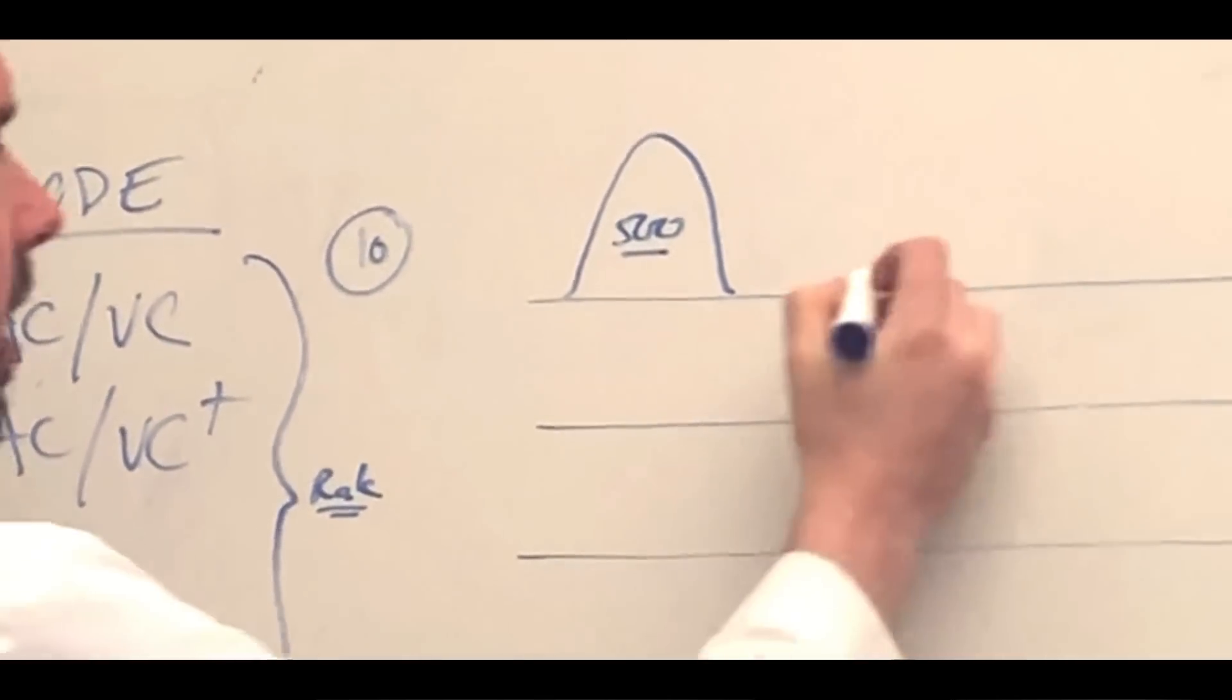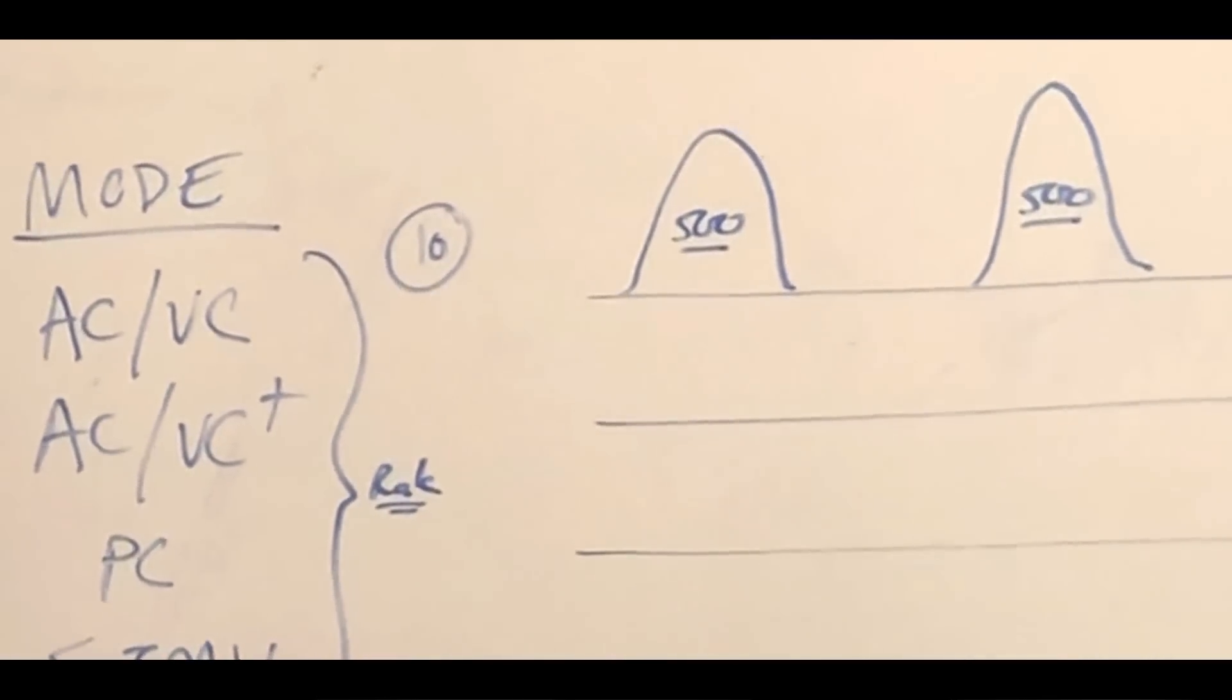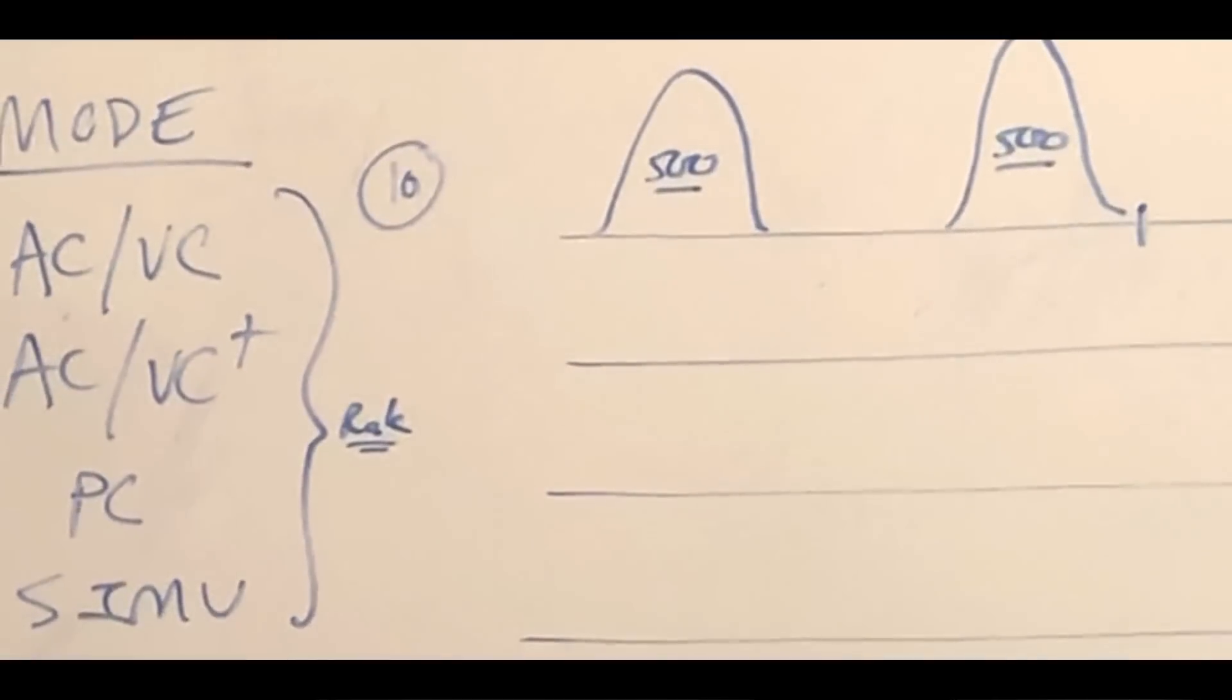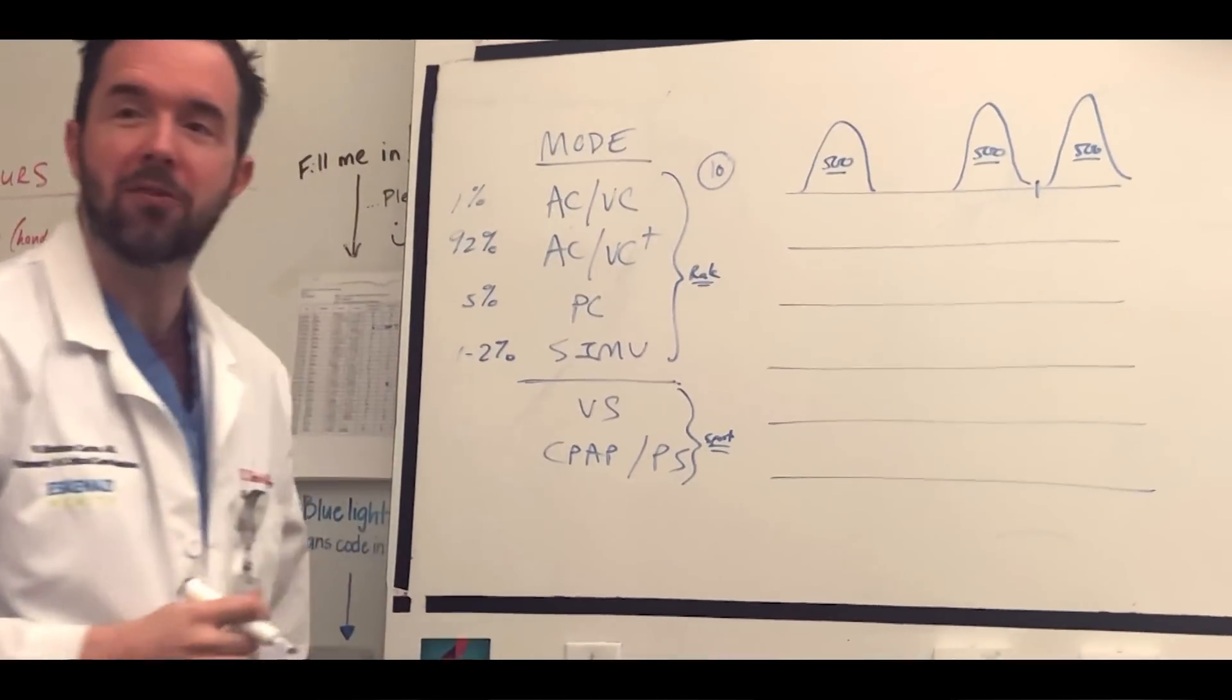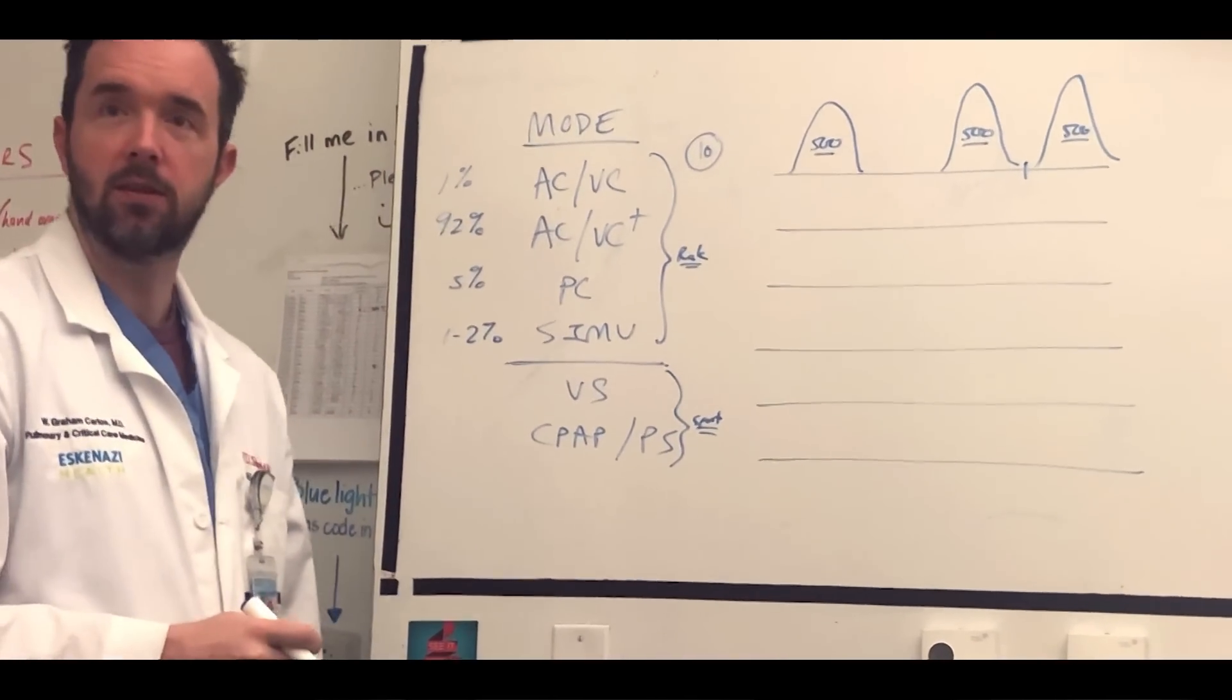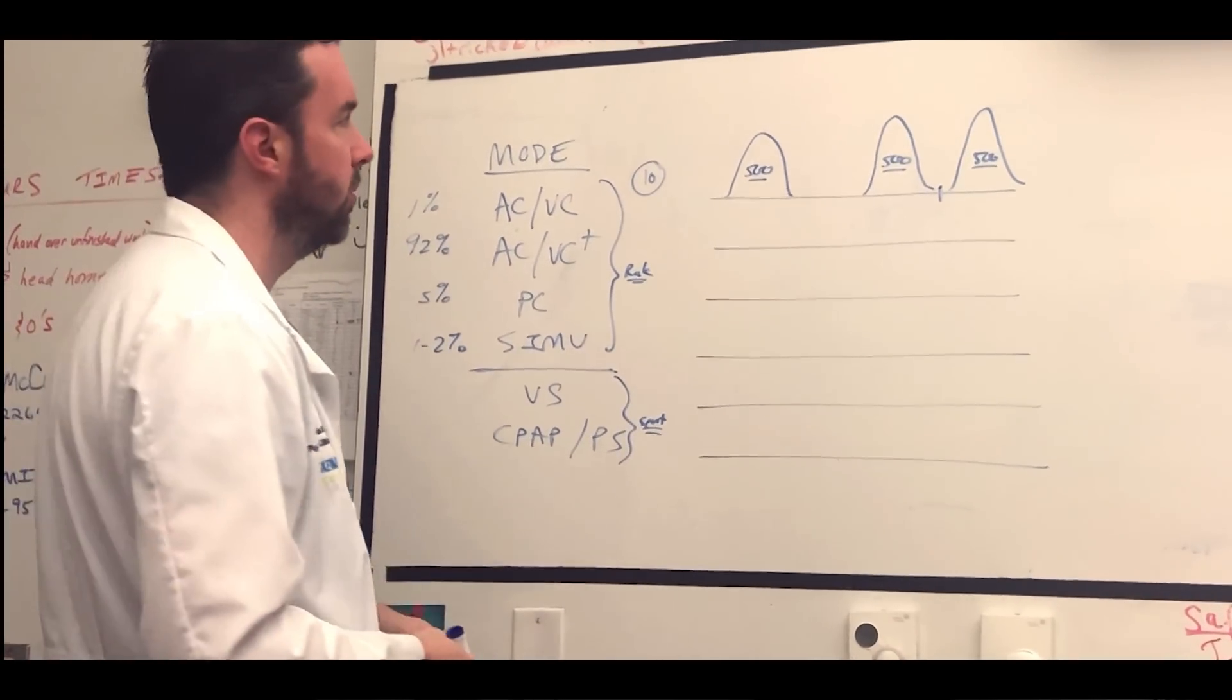If the patient is paralyzed, they're going to get 10 breaths a minute at 500 cc's. If the patient takes an extra breath, because they're not paralyzed, breath number let's say 11, they're going to get 500. If they take 33 breaths a minute, they're going to get 33 breaths a minute at 500 cc's. So you quickly see how somebody could develop say a respiratory alkalosis if they're really anxious or in a lot of pain and they have a higher respiratory rate.